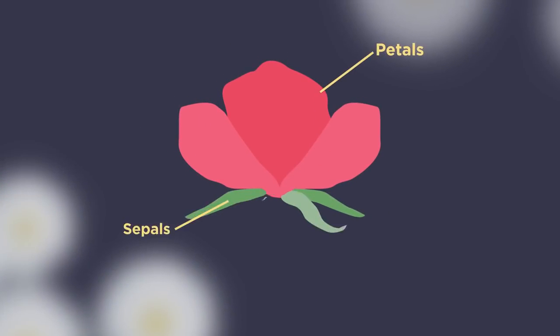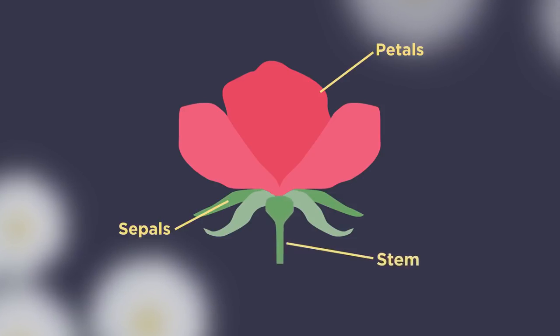The petals and the sepals help protect the flower bud and can be brightly colored or scented to attract pollinators. The stem and the receptacle are the parts that connect the flower to the rest of the plant.